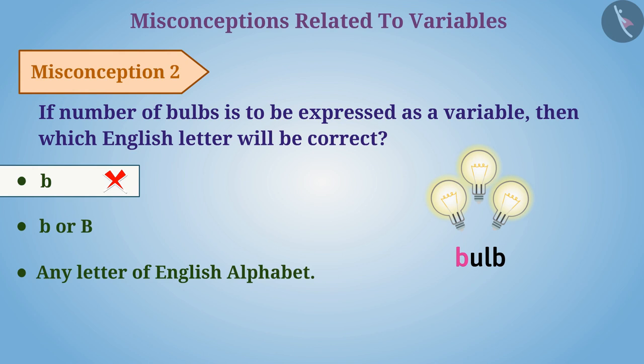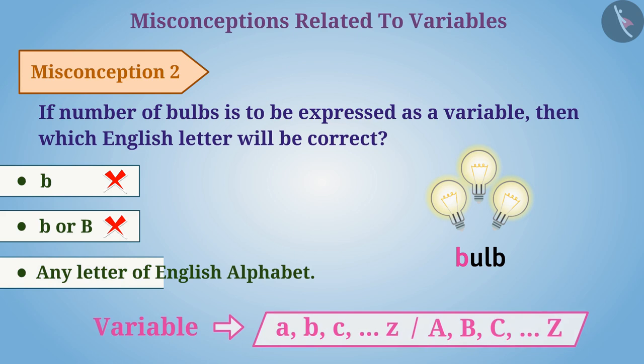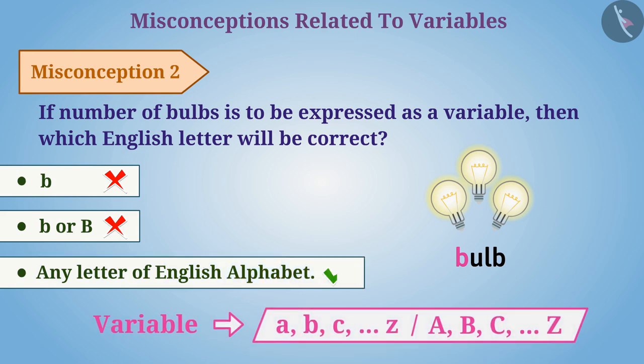In the same way, option 2, that is either small letter b or capital letter B can only be used, is also the wrong answer. Indeed, we can use small letter b or capital letter B to show the number of bulbs, but we can use any letter from the English alphabets for the variable.